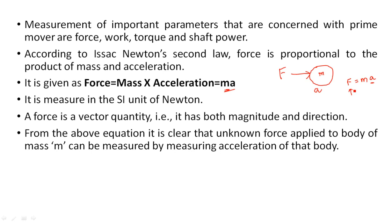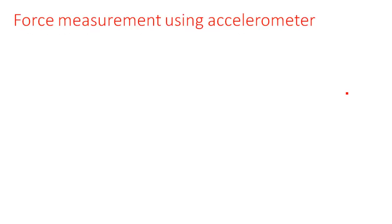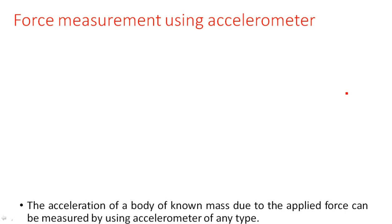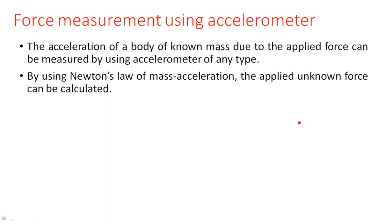From the above equation, it is clear that the unknown force applied to a body of mass m can be measured by measuring the acceleration of the body. The unknown force can be measured using force-measuring sensors like load cells. For force measurement using an accelerometer, the acceleration of a body of known mass due to the applied force can be measured using an accelerometer of any type. Once the acceleration is measured, we can calculate the force using Newton's law.